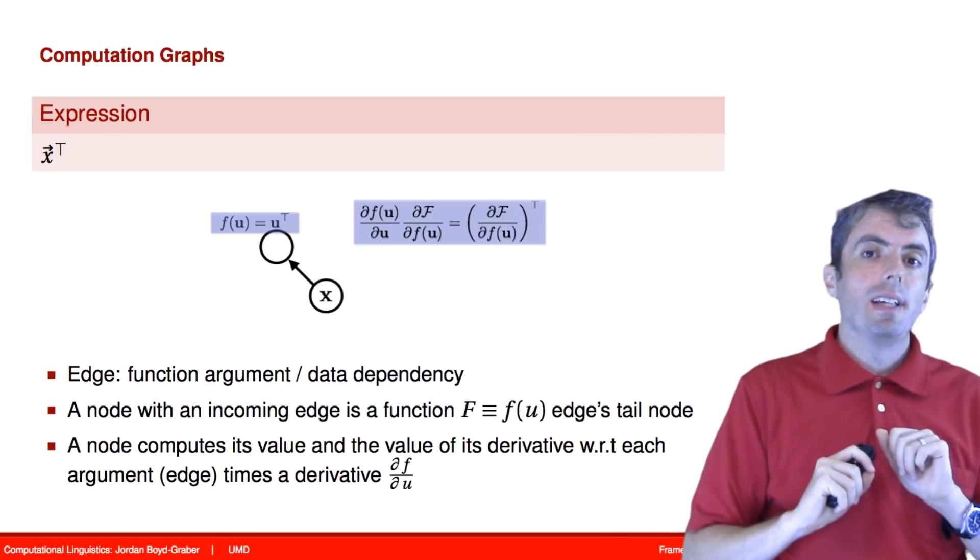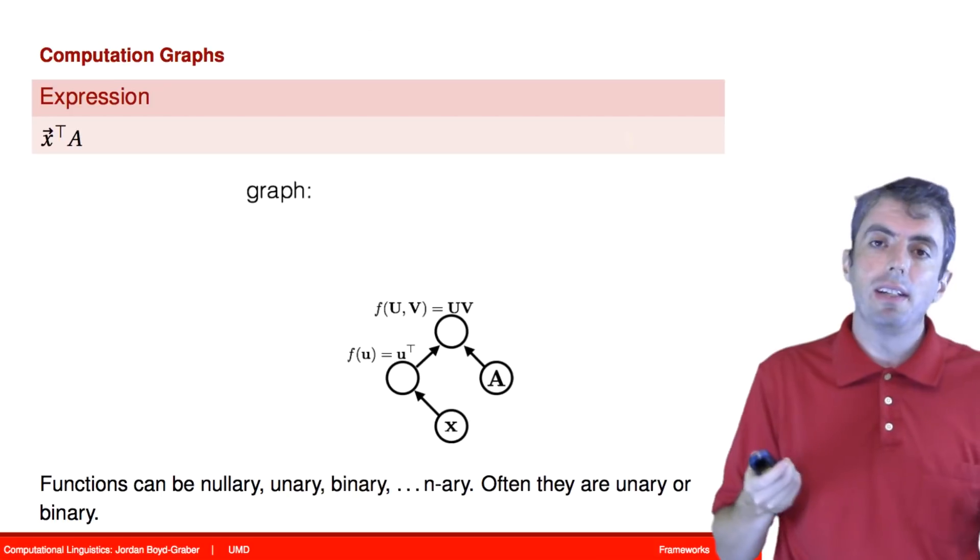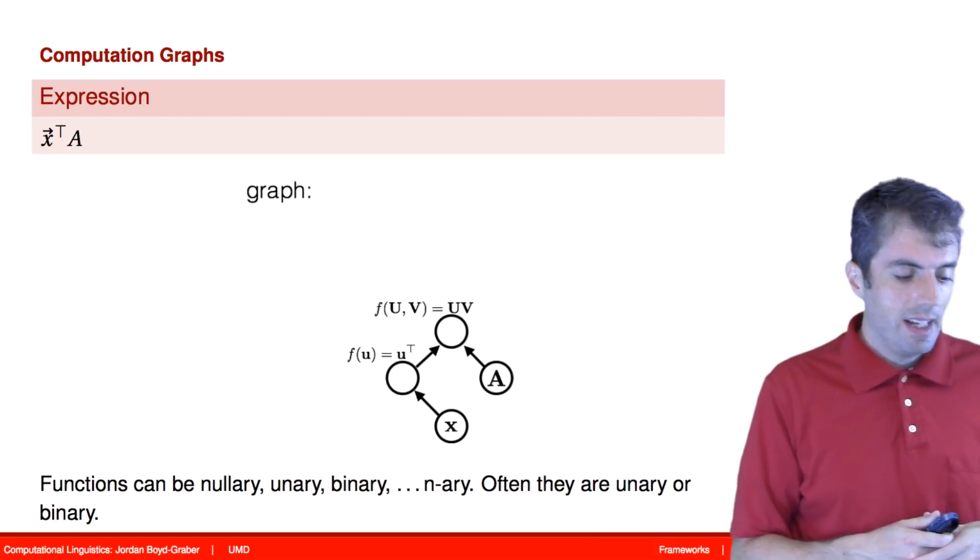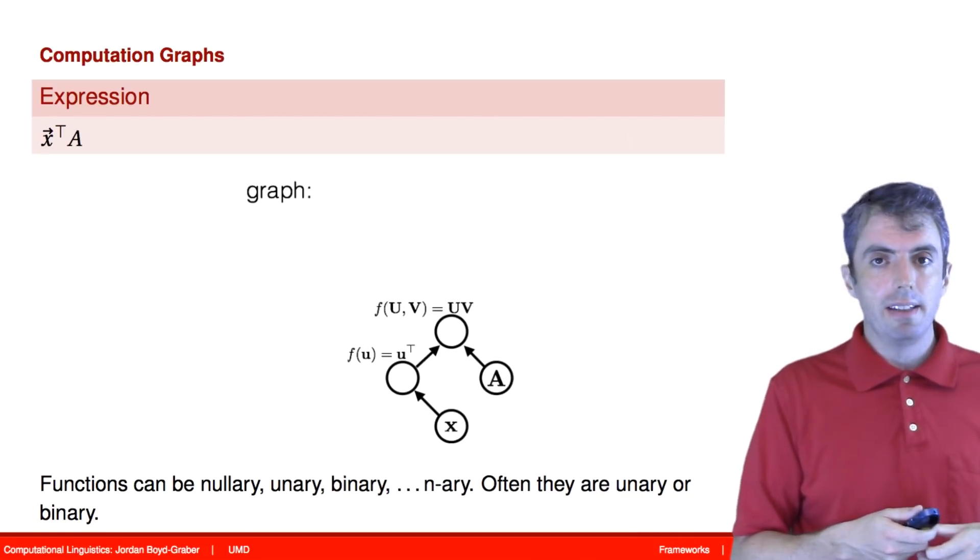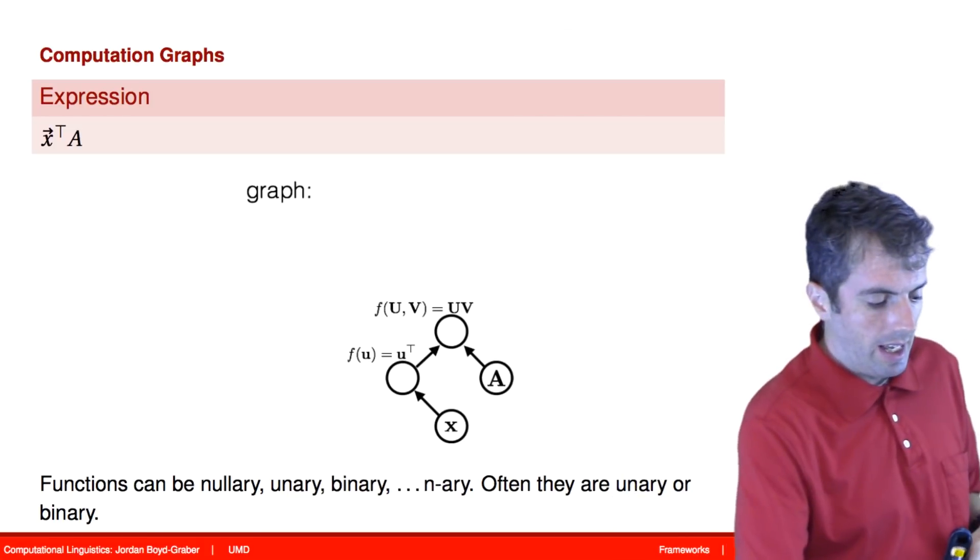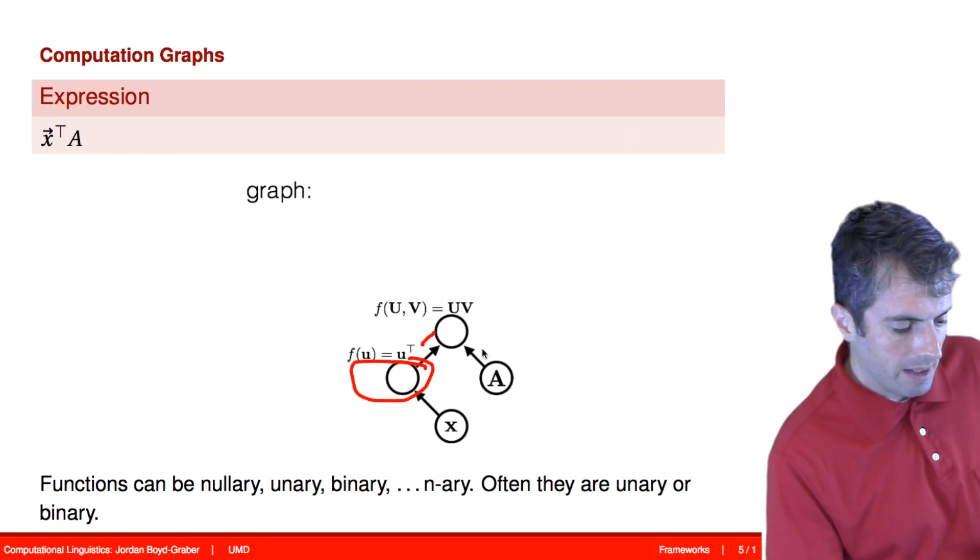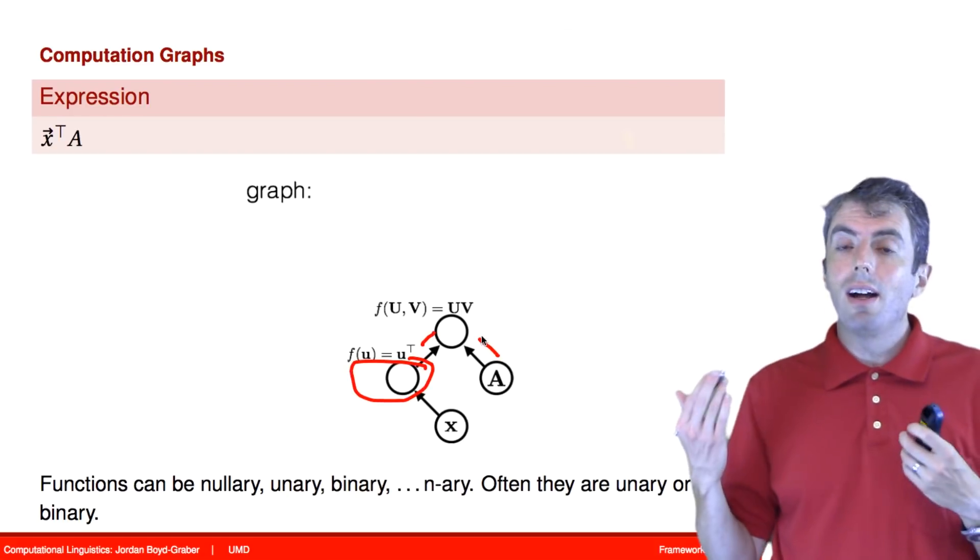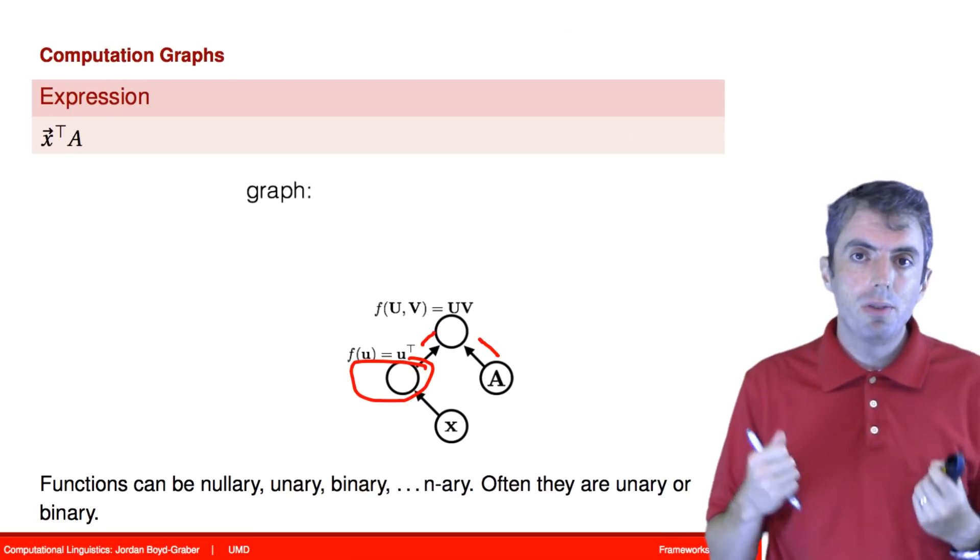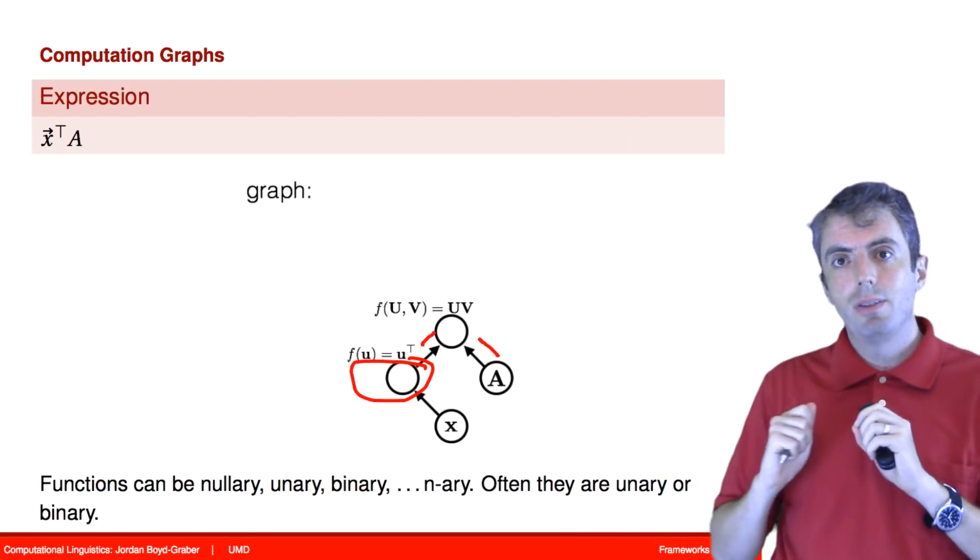This is a very simple expression. Let's make it a little bit more complex. Let's add in another variable. So now we're going to take the transpose of the vector x and multiply it by a matrix A. So now we have a more complicated computation graph. And here we have taken a single vector and we're going to multiply it by a matrix. So now we're getting into nodes that have two incoming edges. And those two incoming edges represent different inputs to a function.